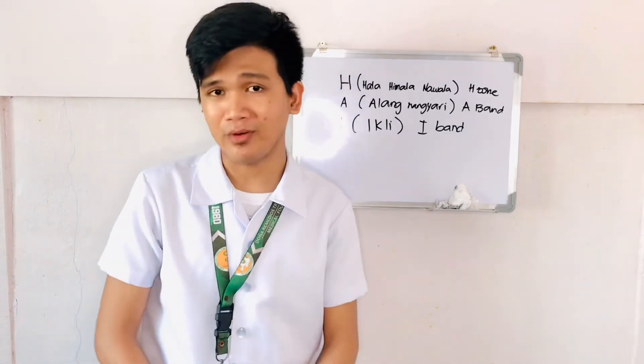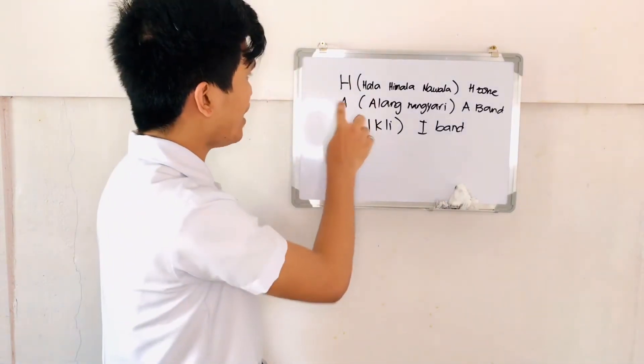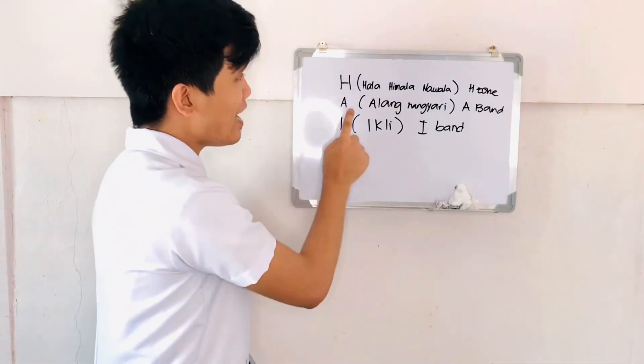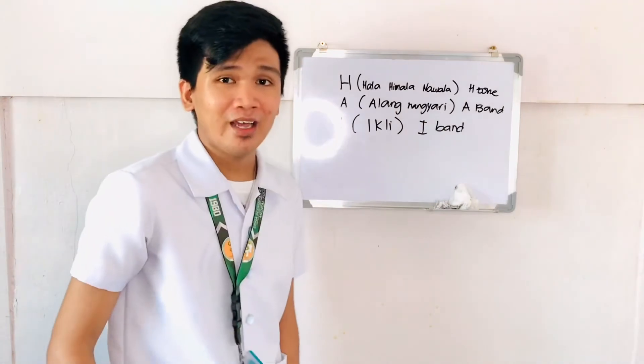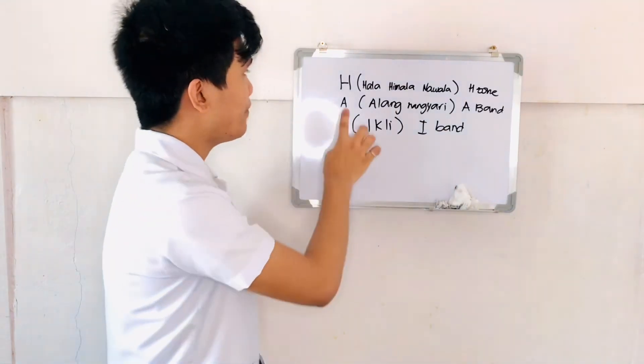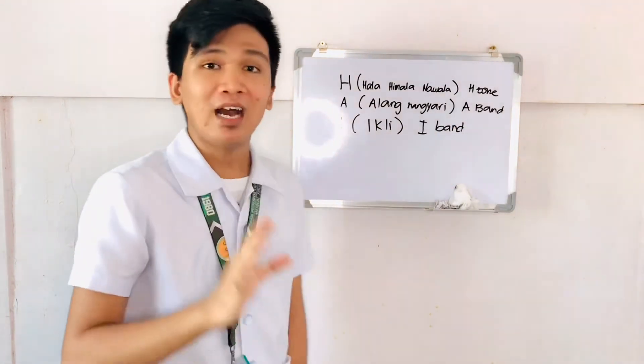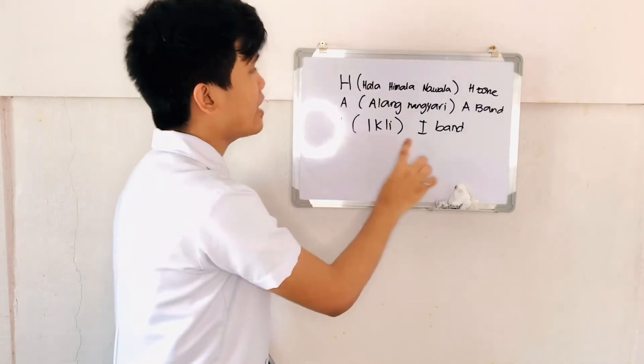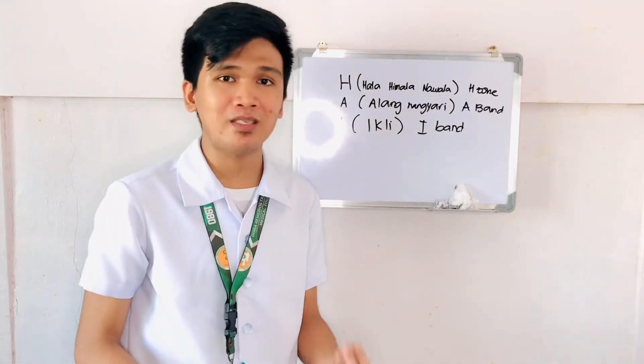We have mnemonics. So we have H-A-I. For H, that is H-zone. The mnemonic is hala, himala, nawala. That means H-zone disappears. And then for A or A-band, alang nangyari. That means it stays the same. While A-ikli, that's for I-band. That means it is narrow.